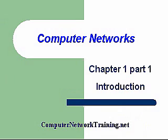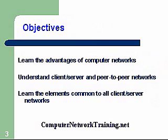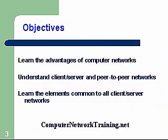Computer networks, chapter one, part one. This is going to be kind of an introduction, and there are going to be three parts to this introduction. Some of the objectives: we're going to learn the advantages of computer networks — what are the advantages of a network over just a peer-to-peer network, where we just have two or more computers connected together without a server. We'll also learn the elements common to a client-server network, and we're going to discuss client-server networks in depth.